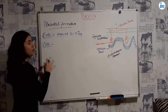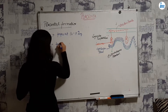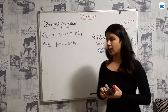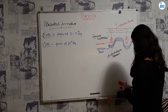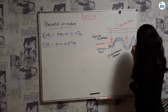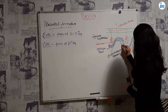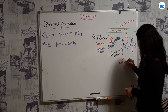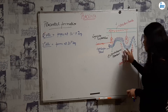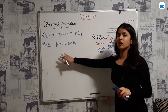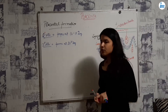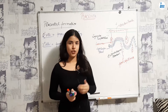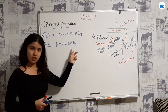Tertiary villi form at day 21. In tertiary villi, there is formation of fetal capillaries. So when asked: when is fetal placental circulation established? The answer is at day 21, when fetal capillaries form.